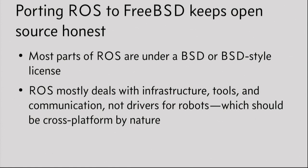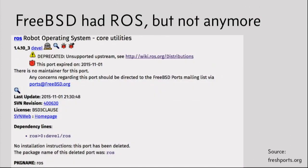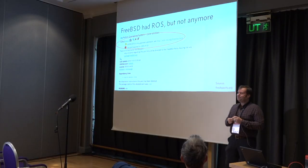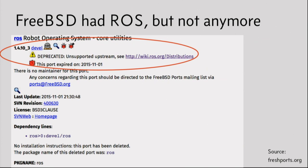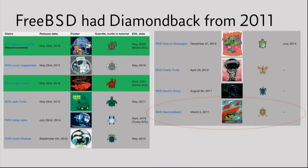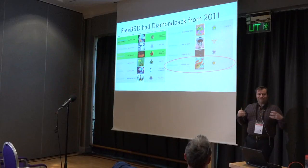The first thing you do when you want to port something to FreeBSD is check FreshPorts. There was already a version of ROS - Rene, who just introduced me, actually did that port back in the day. But it says it's been deprecated because it's unsupported upstream and expired back in 2015. The version is 1.4.10, corresponding to the Diamondback release from 2011. That's nine years of changes that have happened with ROS since then.